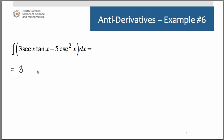The 3 will remain as our coefficient. Think back to the rules we just talked about, antiderivative of secant of x tangent of x is secant of x minus, now we keep the 5 as our coefficient, antiderivative of cosecant squared of x is negative cotangent x. And don't forget our constant of integration. We can then rewrite this very easily.